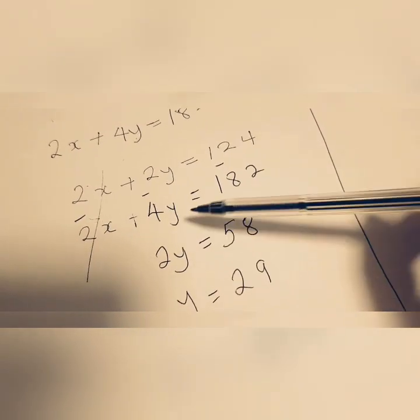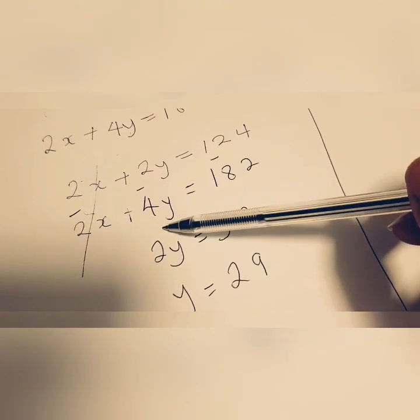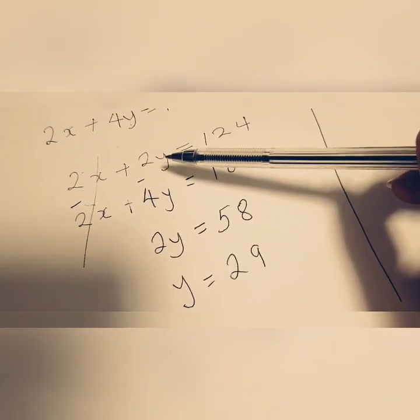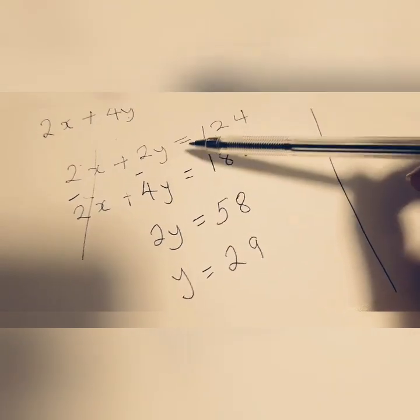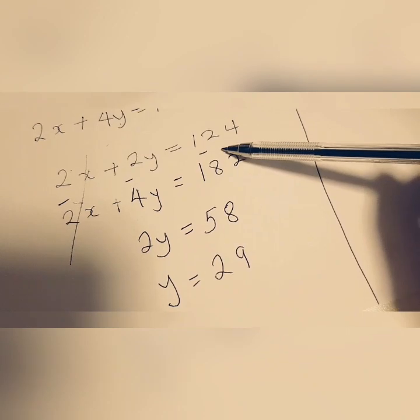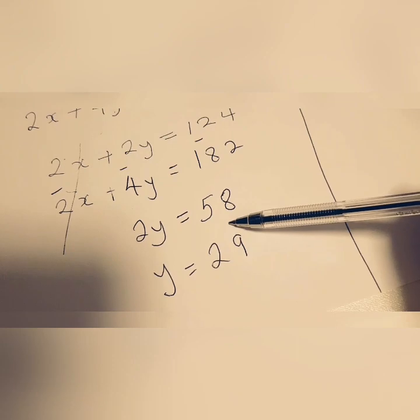Now some people might ask why are you going from bottom to the top? You could go from top to bottom and you end up having the same solution. So if you do 2y take away 4y, you have negative 2y. And if you do 124 take away 182, you have negative 58 which will still give you the same solution.